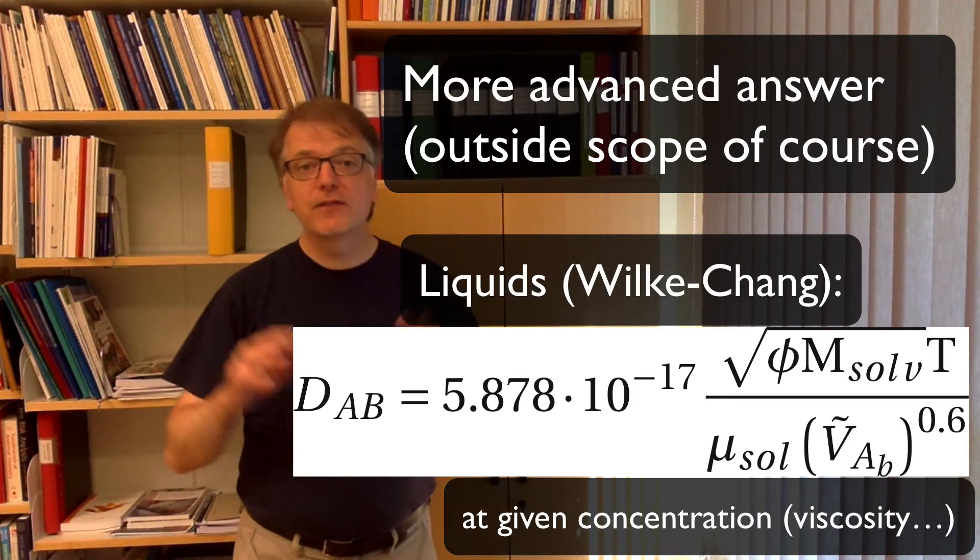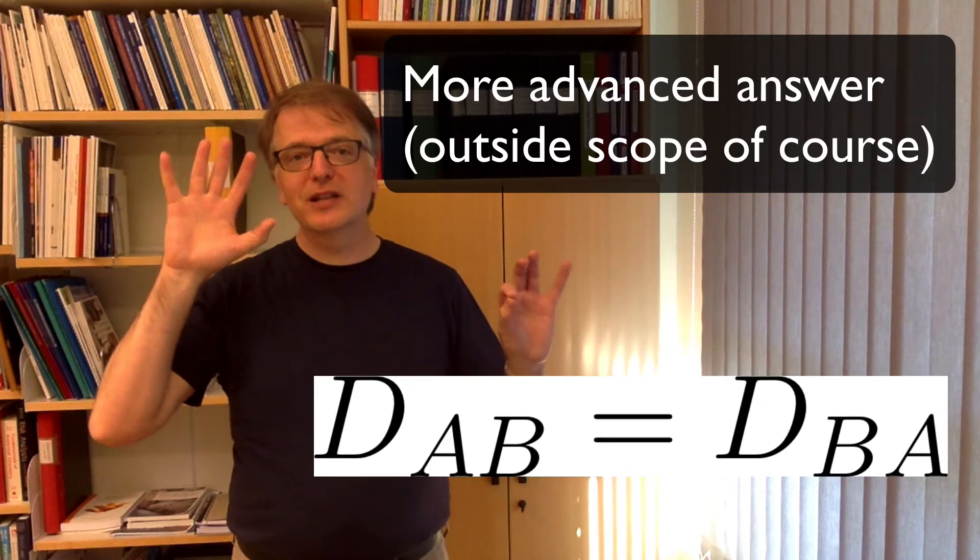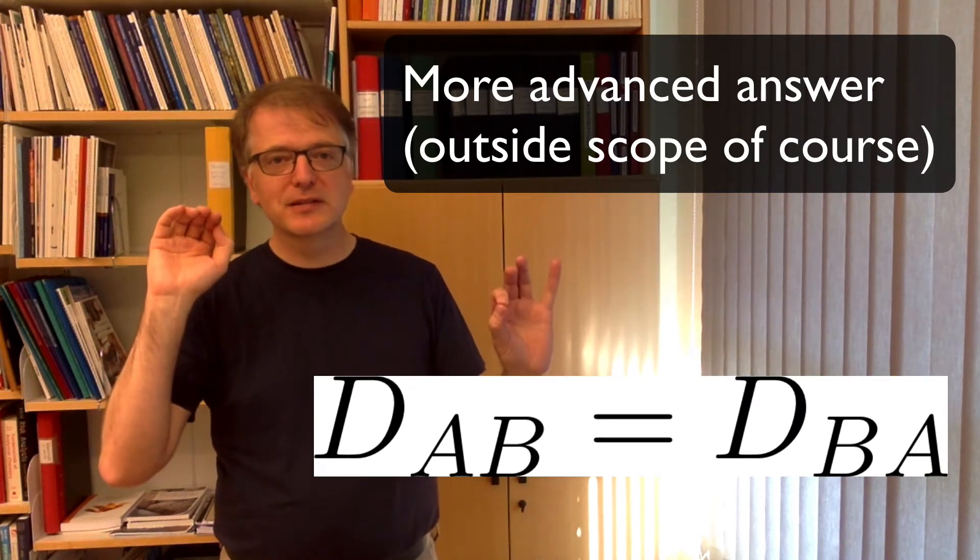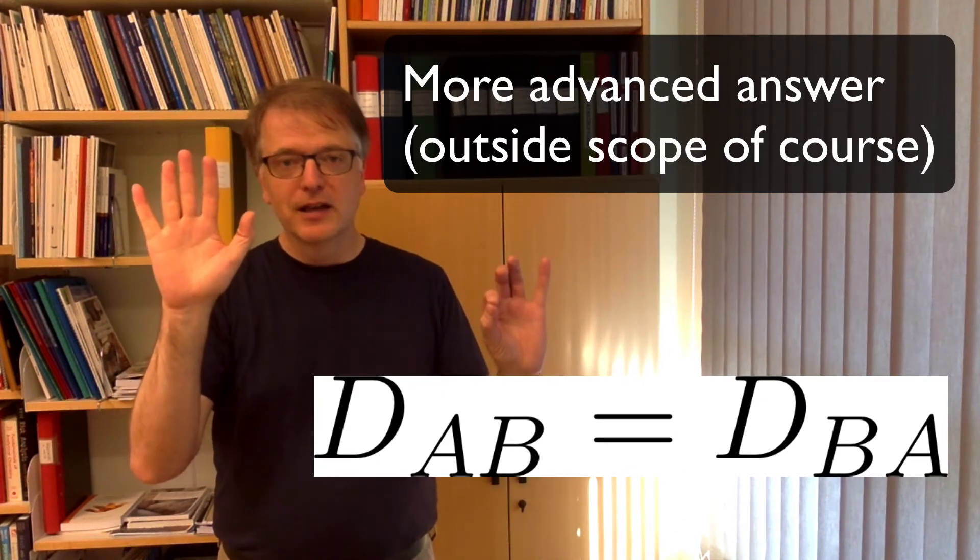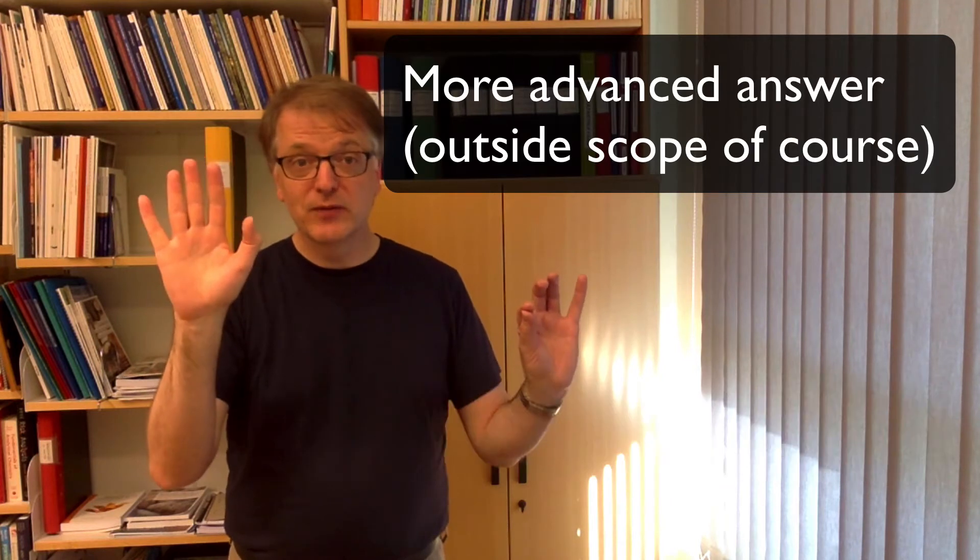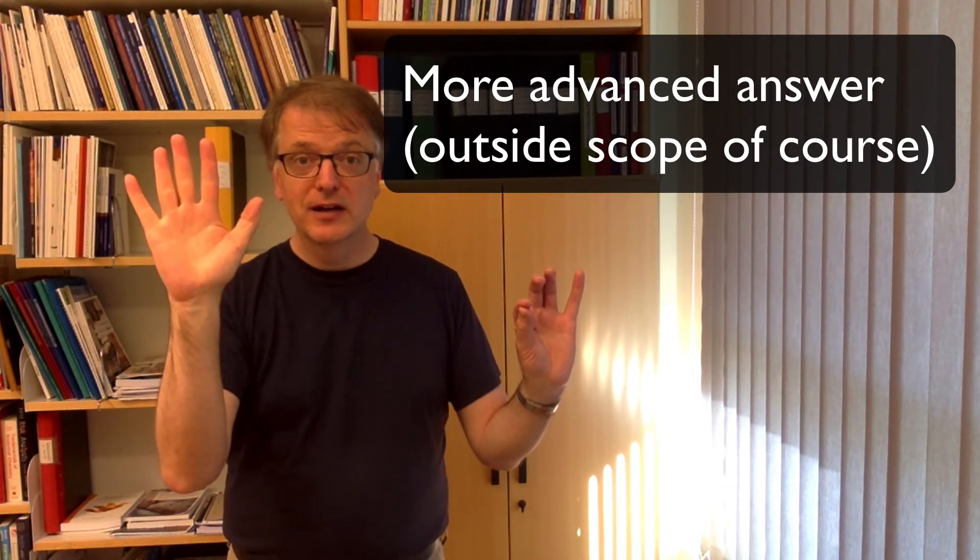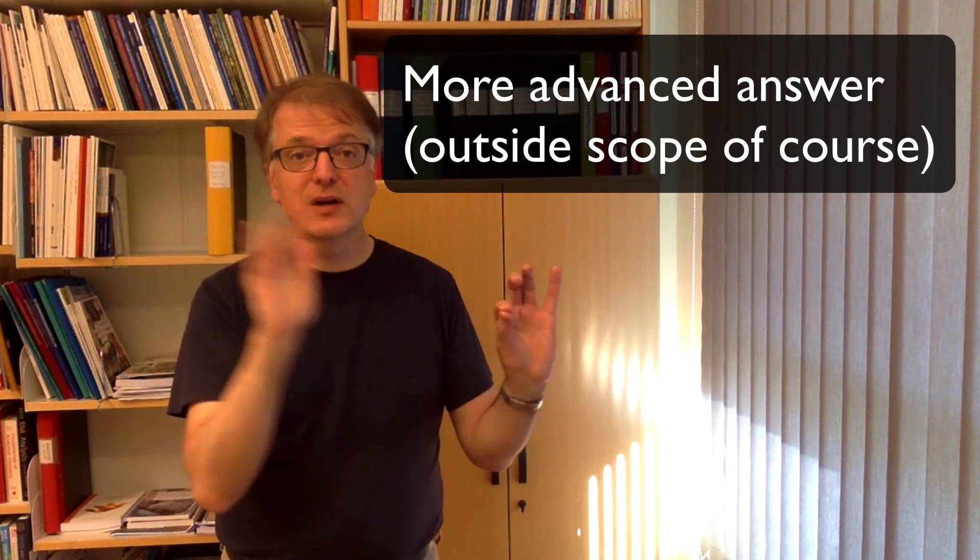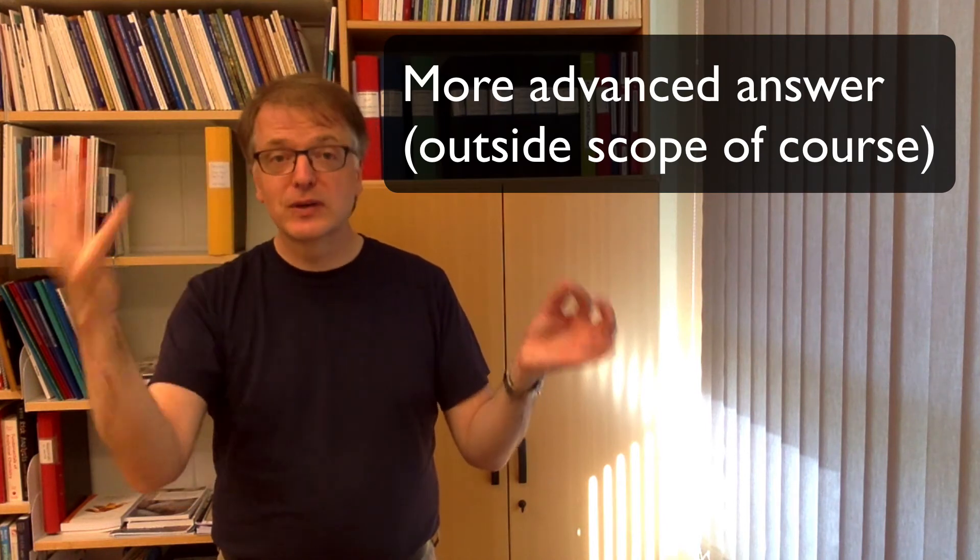So if you keep the concentrations the same, if you have trace amounts of benzene in air, that diffusivity is one value. And if you have a lot of air that diffuses into trace amounts of benzene, then you get the same diffusivity.